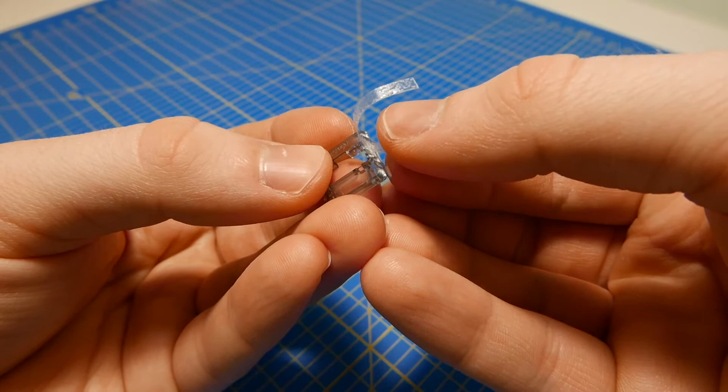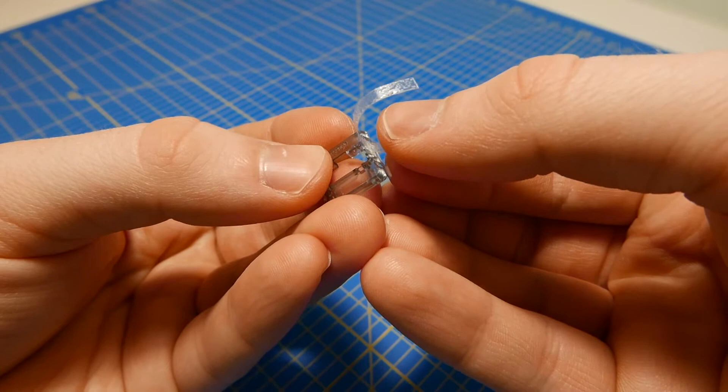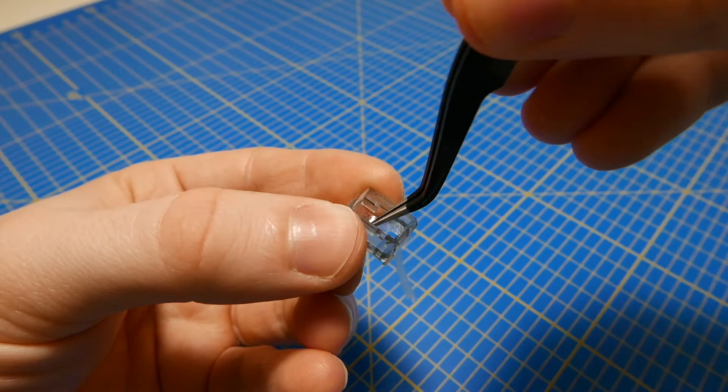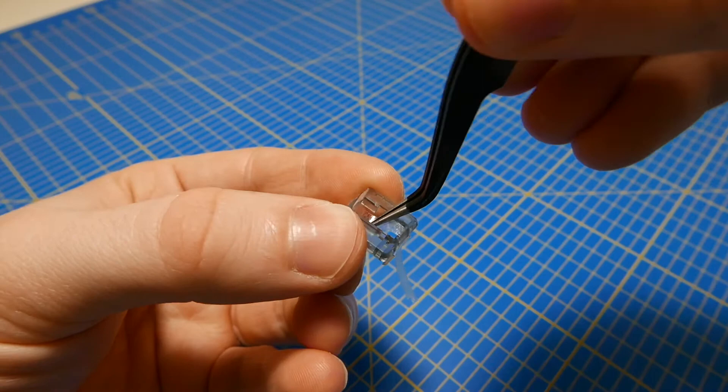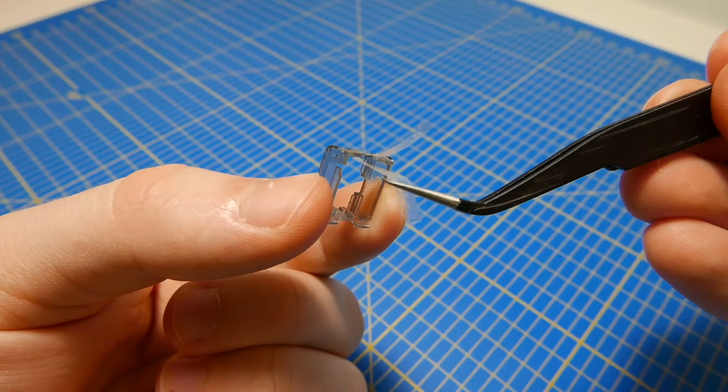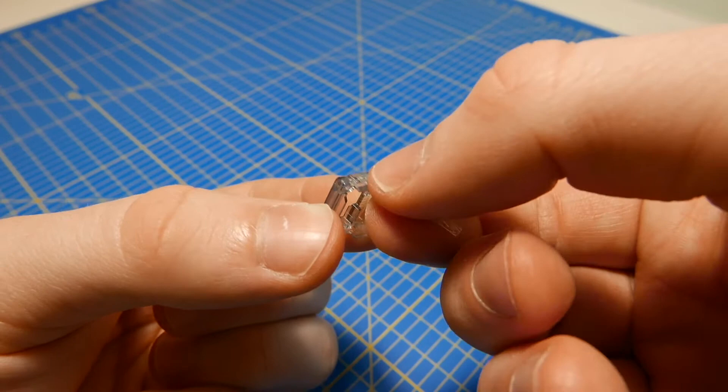Attach tape to each side of the top housing. Make sure the excess points down and outwards to prevent it from coming apart later.